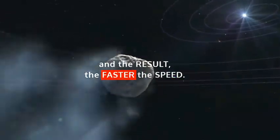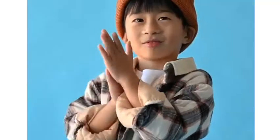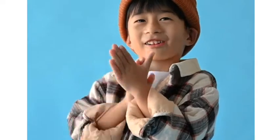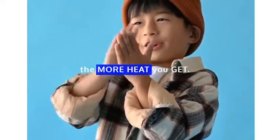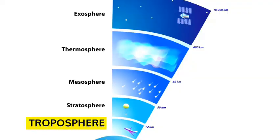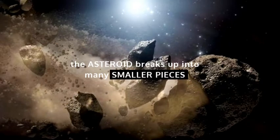The greater the mass, the greater the compression and velocity, and as a result, the faster the speed. It's just like the more intensely you rub your hands together, the more heat you get. As it enters the troposphere, the asteroid breaks up into many smaller pieces and is consumed by flame.